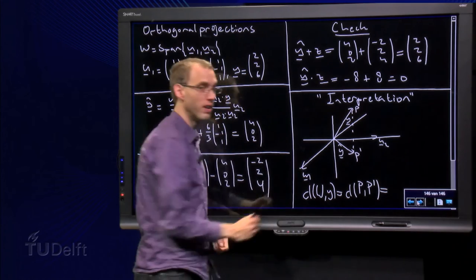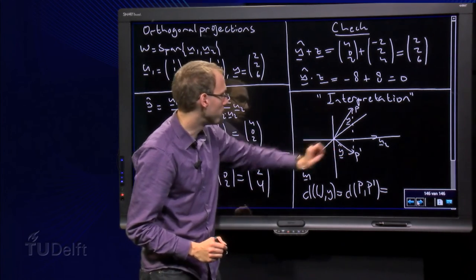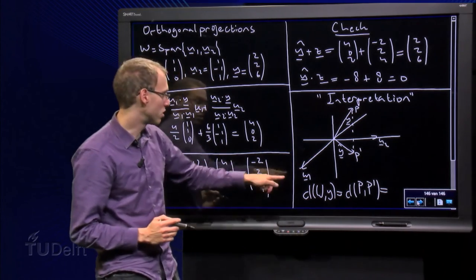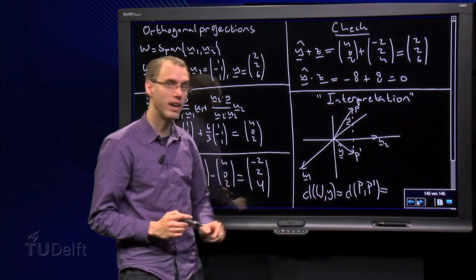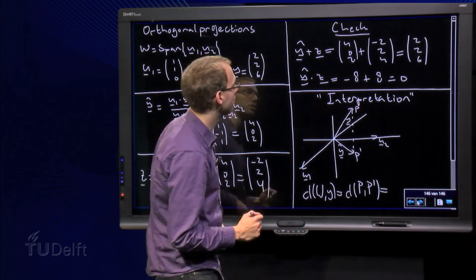And then y is somewhere over there. The y-hat is the vector in the plane closest to y. So we can, for example, use y-hat to compute the distance from W to y, which is the same as the distance from y to y-hat, which is the same as the length of z.